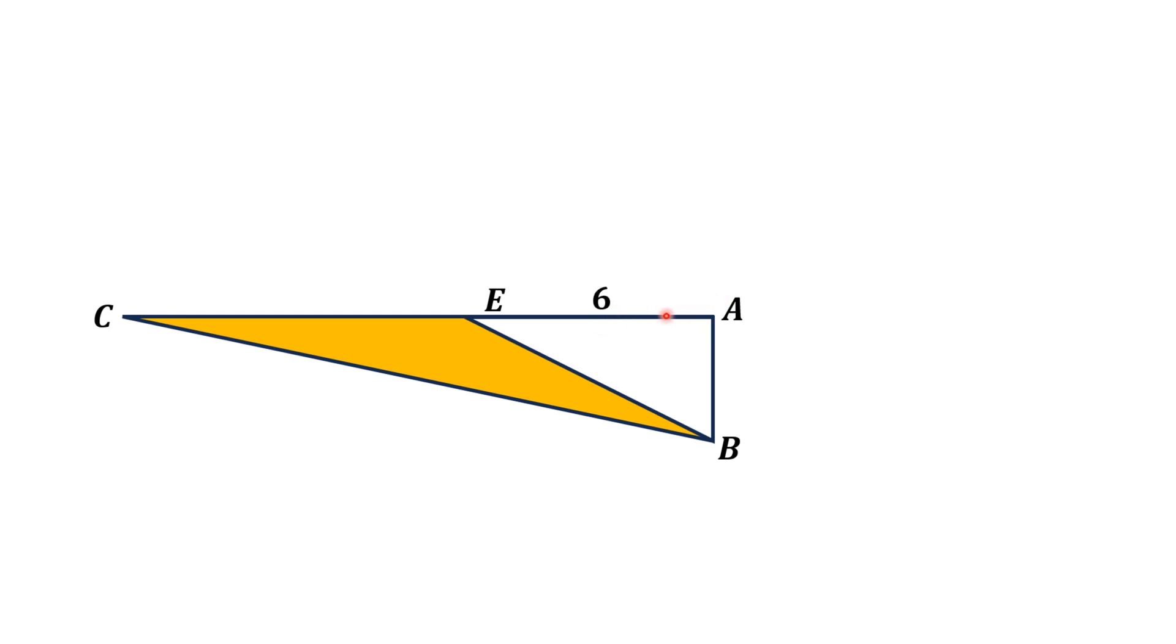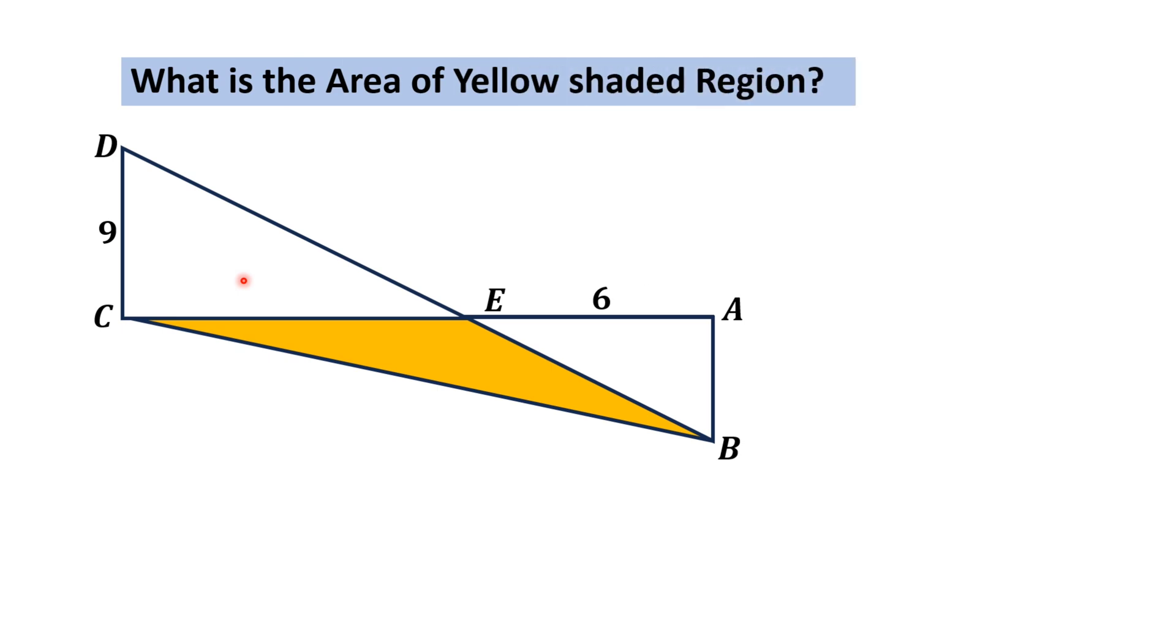Moreover, another triangle CDE is given, and from here CD length is 9 units. By this limited data, we have to find the area of the yellow shaded region, which is actually the triangle BCE.